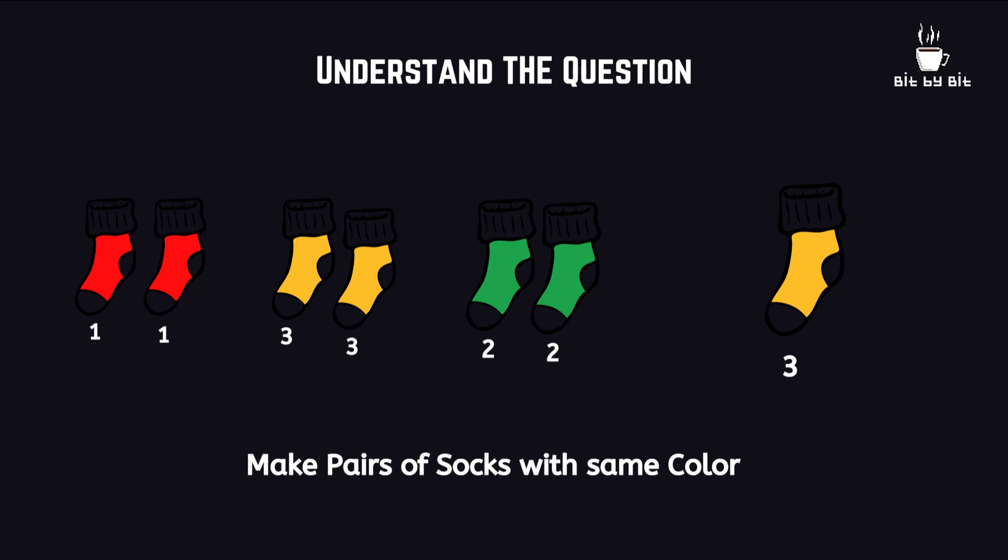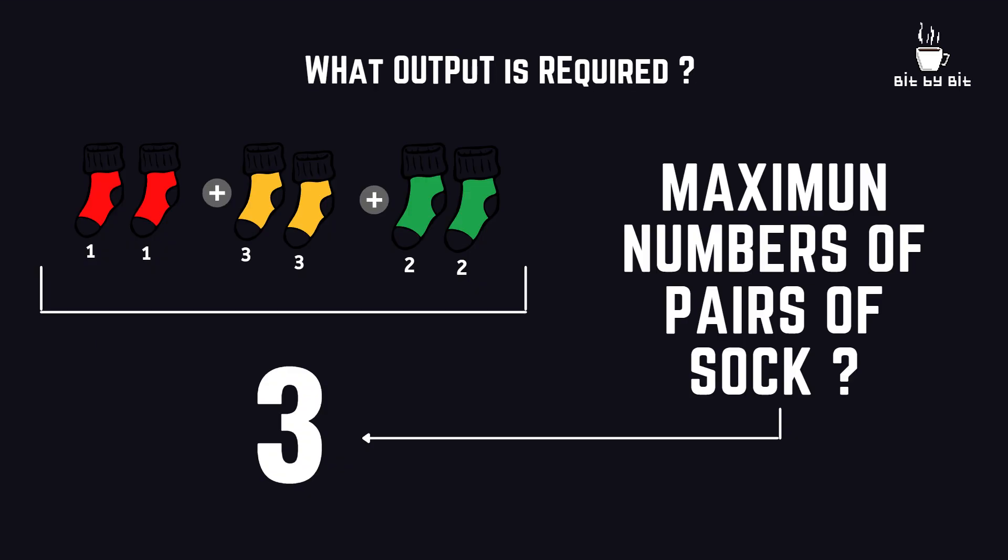In this example, all red, yellow, and green socks have a pair, except there is one extra sock left out. We ignore that as we only need to find the total number of pairs made out of the input, which in this case is 3.